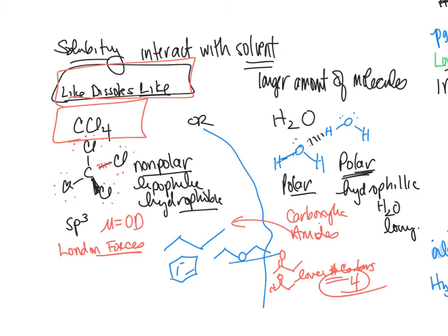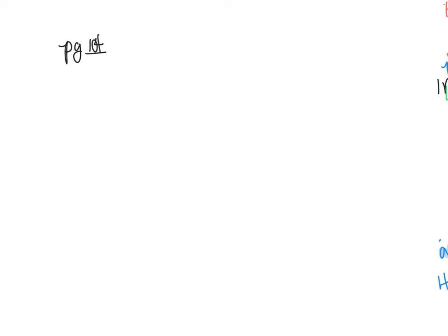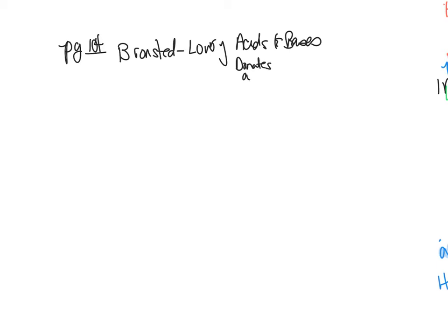The last topic is acid-base chemistry. We'll briefly cover the definitions. In your book on page 104, there are Brønsted-Lowry acids and bases. Thomas Lowry was an English chemist and Brønsted a Danish chemist. They defined an acid as a proton donor and a base as a proton acceptor — different from the Arrhenius definition, which was focused on generating H₃O⁺ or OH⁻ in water.